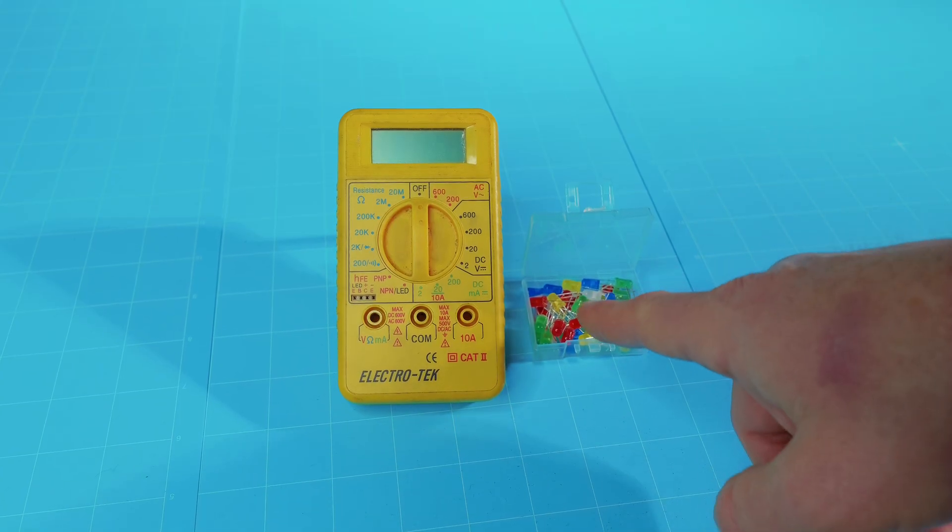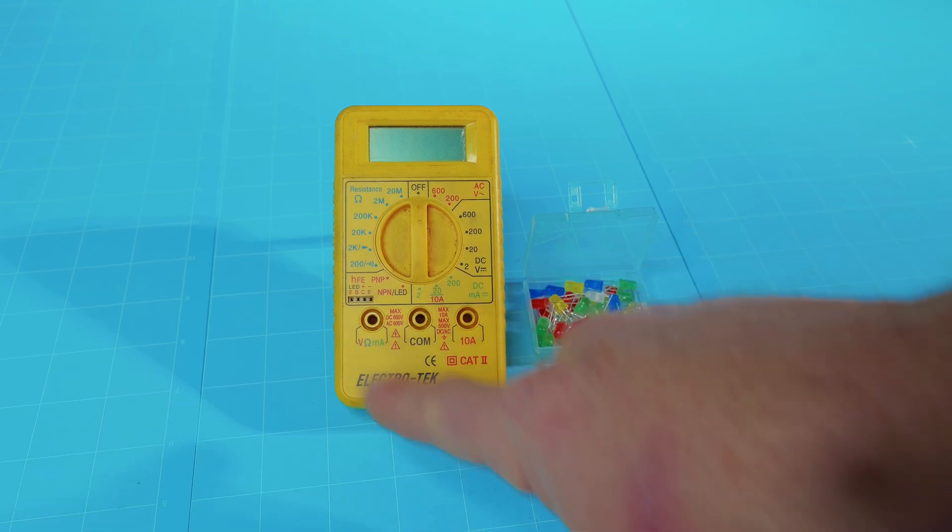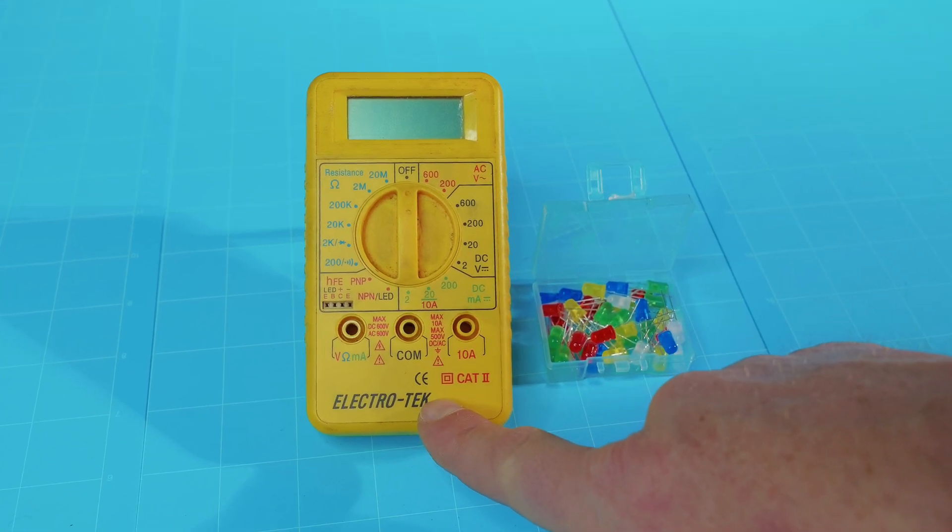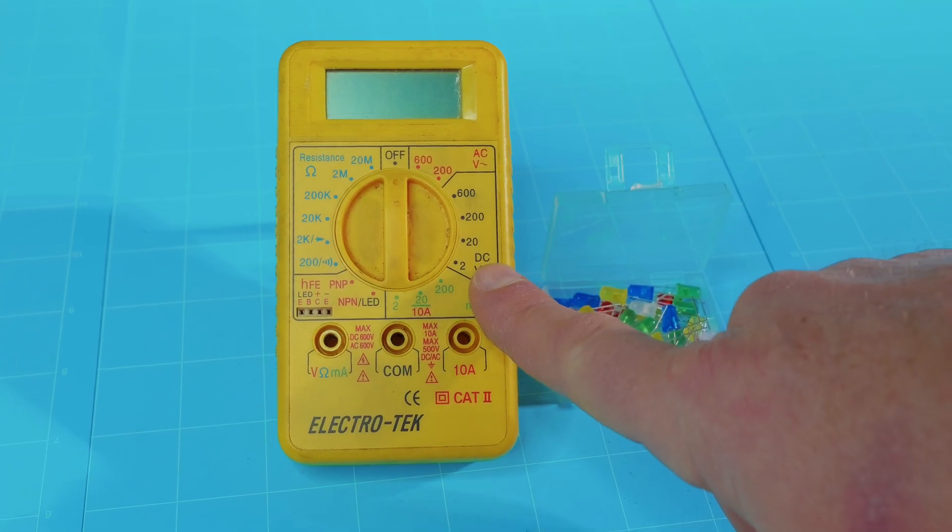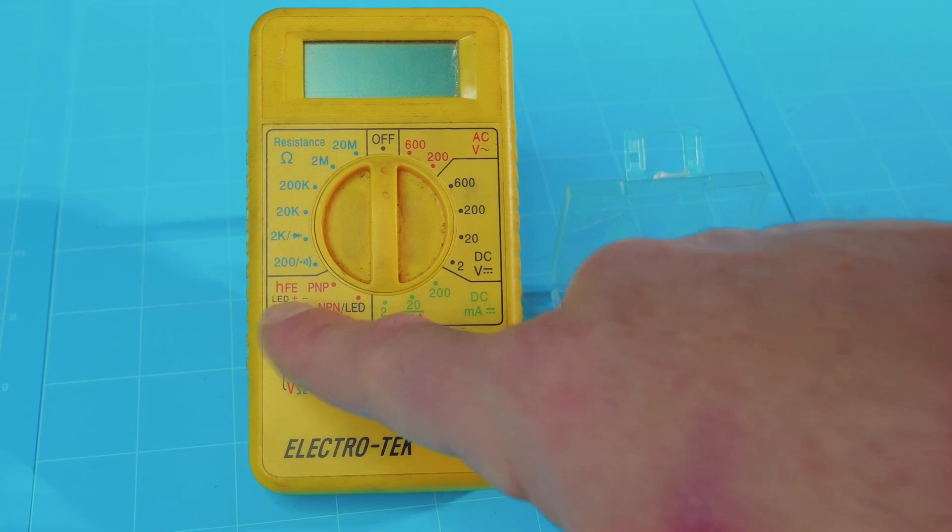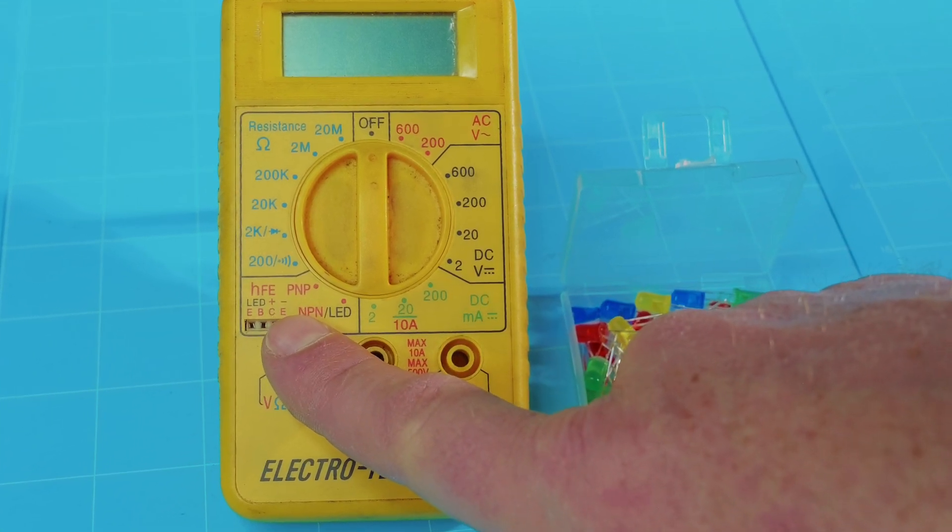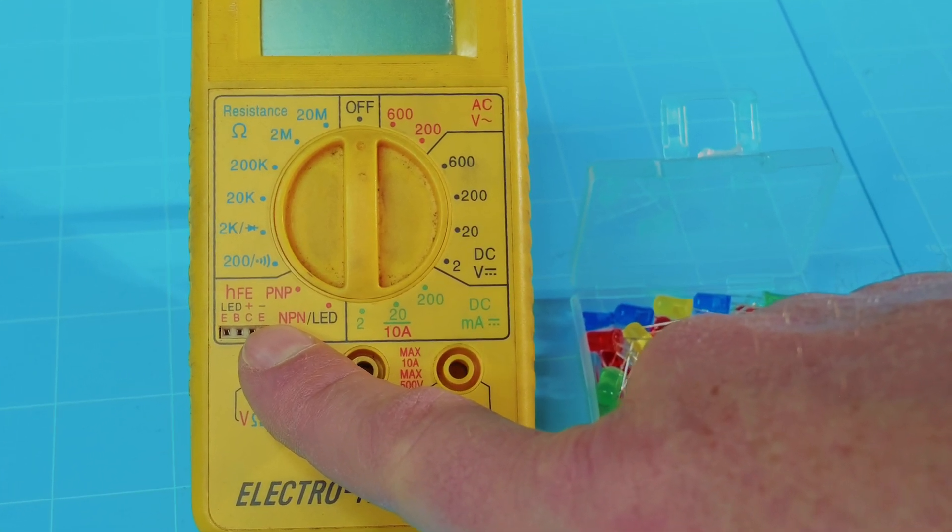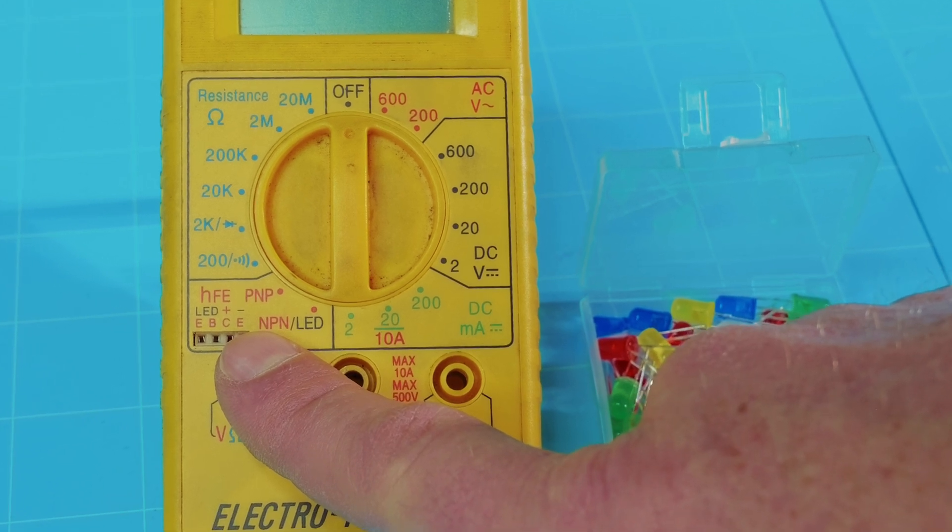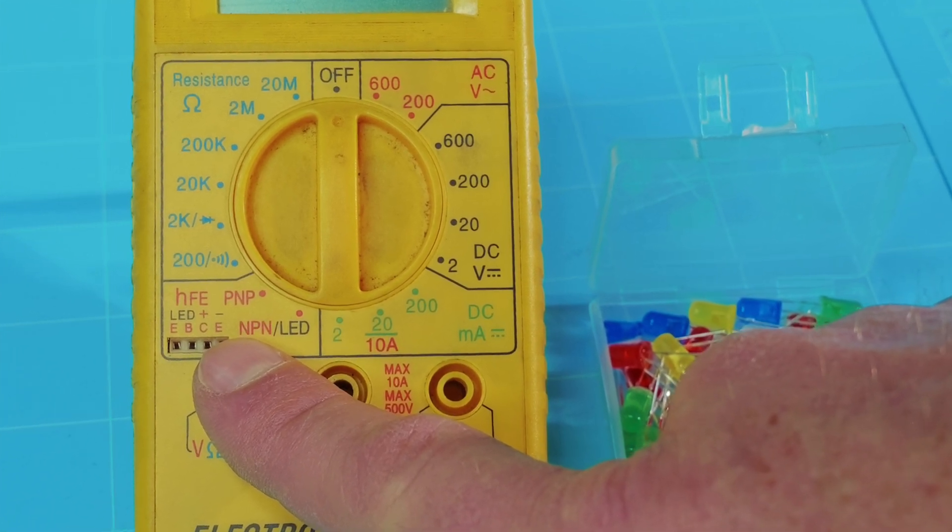So that's it, folks. It's that easy to test these LEDs, especially if you have this cheaper Electrotech multimeter. It's actually the bottom end of multimeters, but it does have that unique feature where you can plug in your LED or diodes directly into the front panel, which is pretty neat.